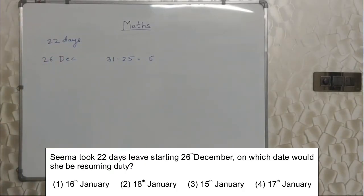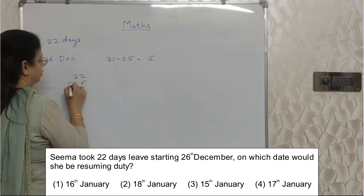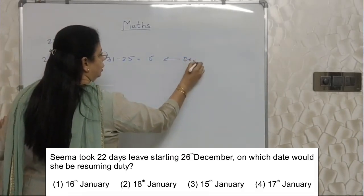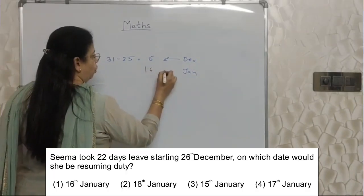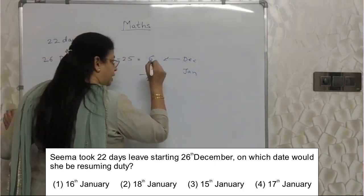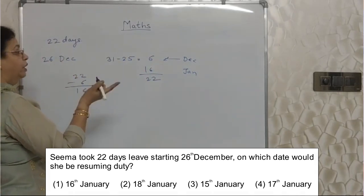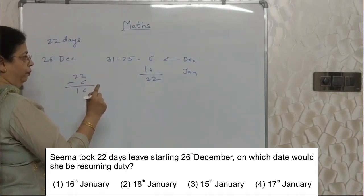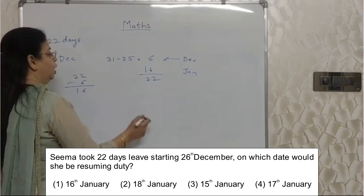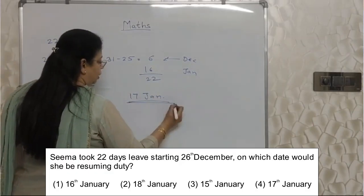Now, 22 days of leave total — 6 days are over in December. So 22 minus 6 equals 16 days remaining. Those 16 days fall in January. So up to 16th January she will be on leave, meaning 22 days are fully over. So she will be on leave up to 16th January.